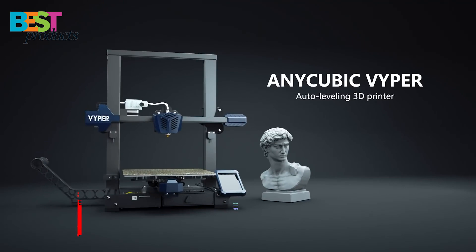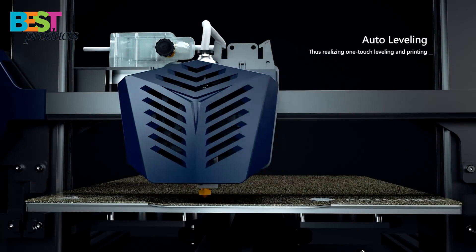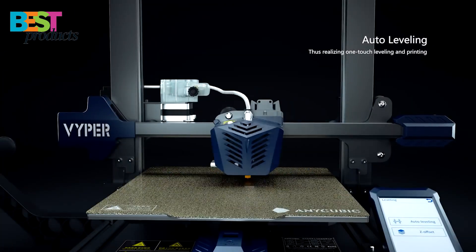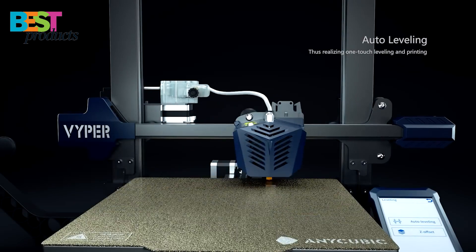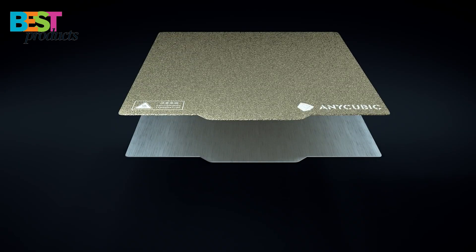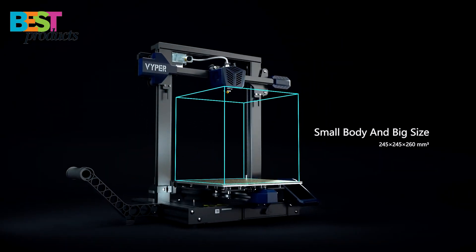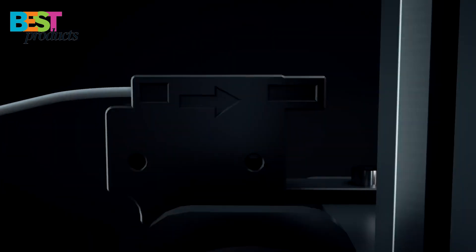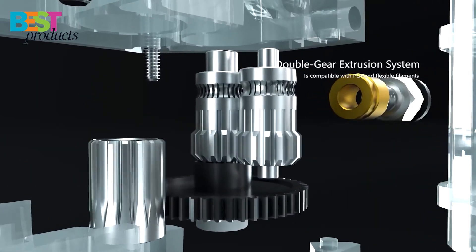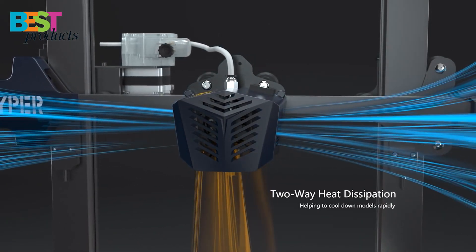Number 2: Anycubic. The Anycubic Viper is a great choice for those looking for an upgrade from their current 3D printer. The auto-leveling feature is a great addition for beginners, as it takes the guesswork out of leveling the print bed. The printer also has a fast assembly time thanks to its integrated structure and modular design. The high-performance Cortex M3 chip ensures that the printer runs smoothly and quietly, while the spring steel magnetic platform ensures that your prints are of the highest quality.